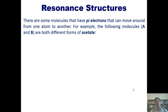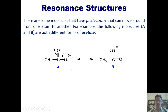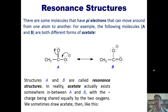Now, to resonance structures. This is a topic I've discussed before in general chemistry, though not as in-depth as today. There are some molecules that have pi electrons that can move around from one atom to another. For example, the following molecules are both different forms of acetate. You can imagine form A having a negatively charged oxygen with an extra set of lone pairs. If it takes that negative charge and dumps it down to form a carbon-oxygen double bond, it pushes the pi electrons onto the other oxygen, which now has a formal negative one charge. These are both different forms of acetate. Structures A and B are called resonance structures.